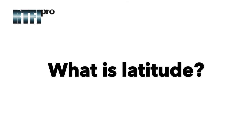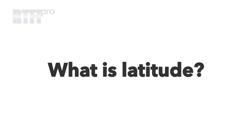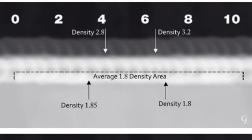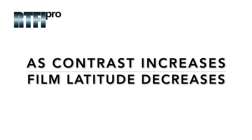So what is latitude? Film latitude is the range of material thicknesses that can be seen on a radiograph — basically, how well different thicknesses are seen on a radiograph within density. As contrast on a radiograph increases, film latitude decreases.